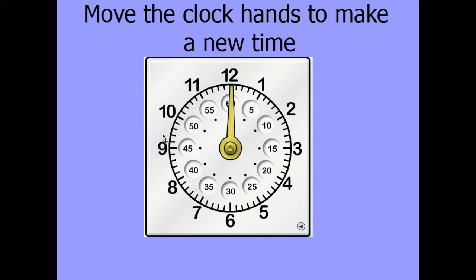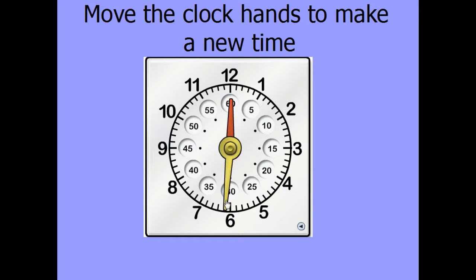Now that we know about the hour hand and the minute hand, we'll go ahead and practice a few so that we can fully understand how to read an analog clock. When we read an analog clock, we always start with the hour hand. Here we have our minute hand moving just to show you where the hour hand is.